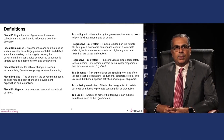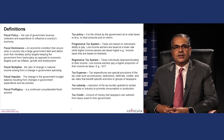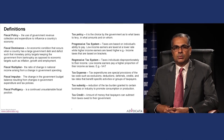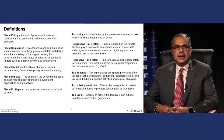Fiscal multiplier is the ratio of change in national income arising from a change in government spending. Fiscal impulse is the change in government budget balance resulting from a change in government expenditure and tax policies. And finally, profligacy is a continued unsustainable fiscal position.